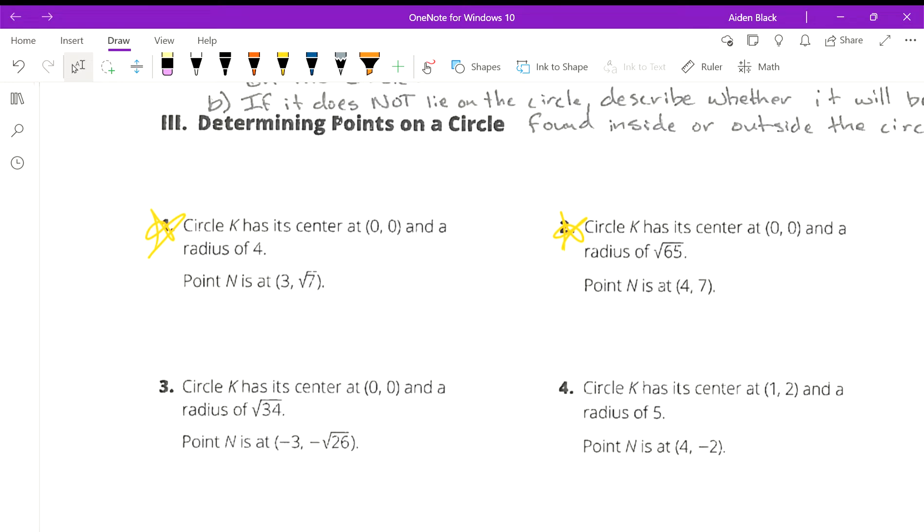So for this first one, our center h,k is 0,0. So while you could write this for your equation, x minus 0 squared plus y minus 0 squared equals 4 squared, 16, we know this is actually most simple. It's the same thing. So this is our equation, and we're wondering if point N lies on the circle.